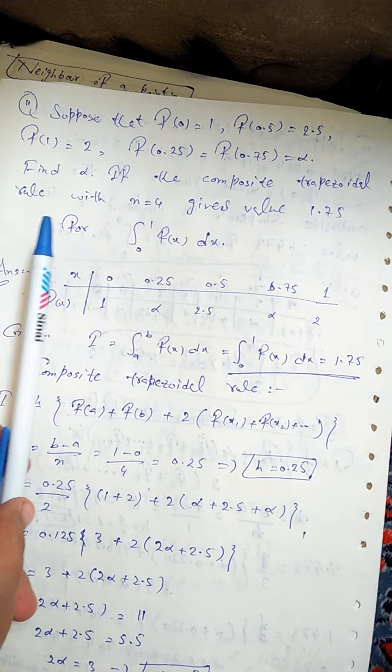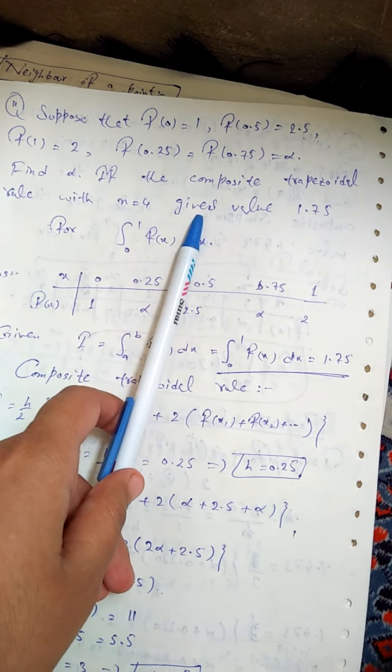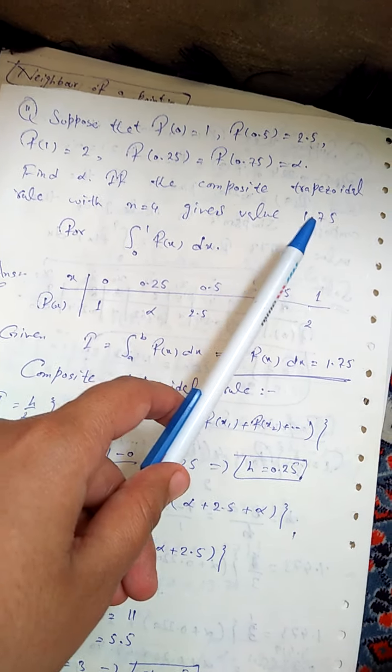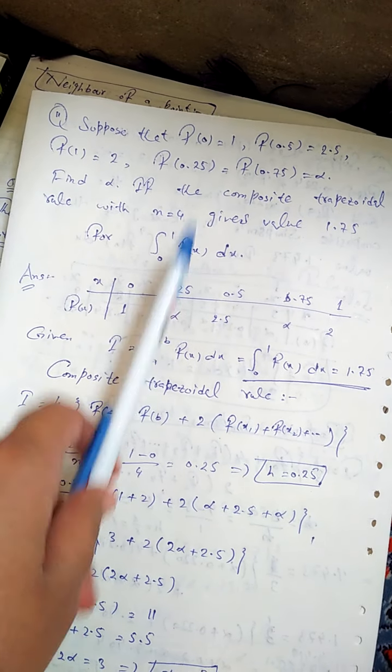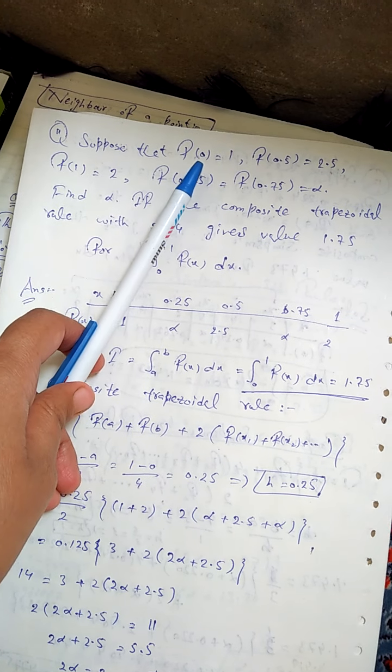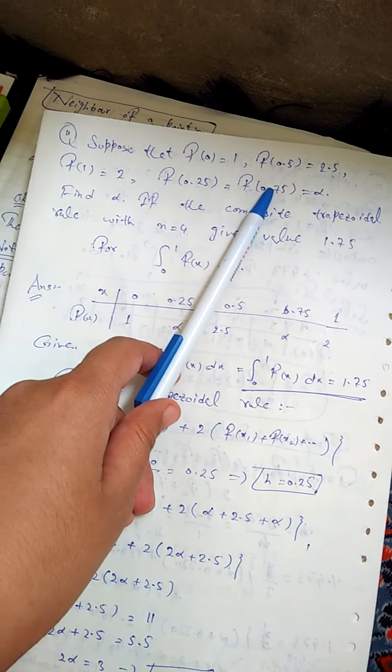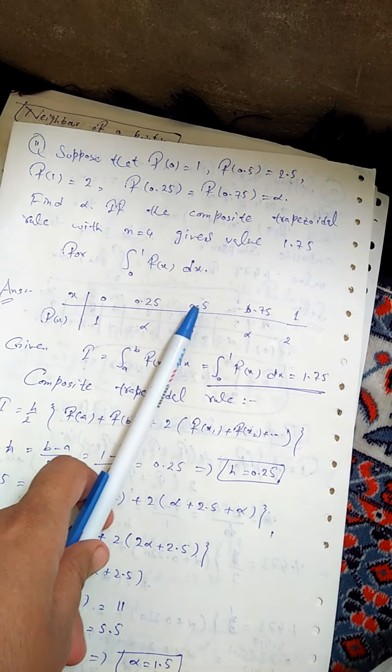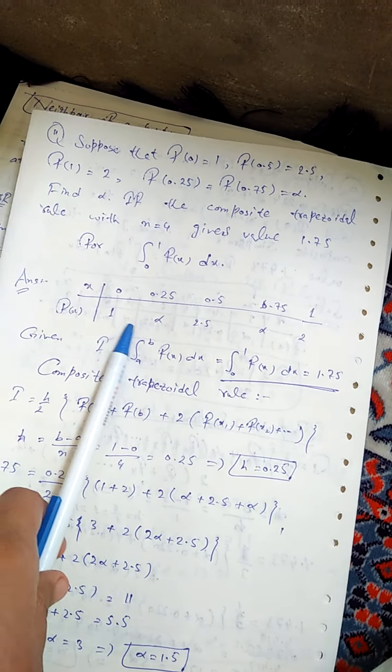Composite Trapezoidal rule. Use it with N is equal to 4. N gives values. And when we put Trapezoidal rule, final answer is 1.75 for this expression. What do you do? First of all, the small value is 0.0, then the next value is 0.25, the next value is 0.5, the next value is 0.75, then the next value is 1. Look at this, these are all 0.25 distance. X and functional values are given.